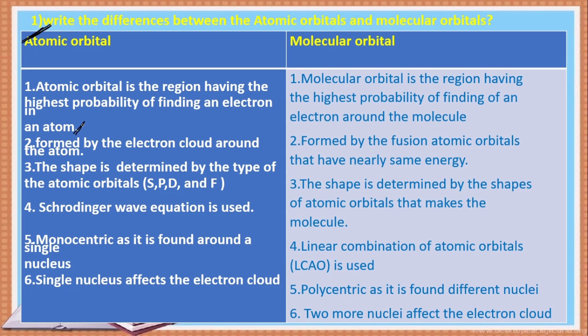Molecular orbital is the region having the highest probability of finding an electron around the molecule — not around an atom, but around the molecule. That is the key difference between atomic orbital and molecular orbital. The atomic orbital is formed by the electron cloud around the atom.